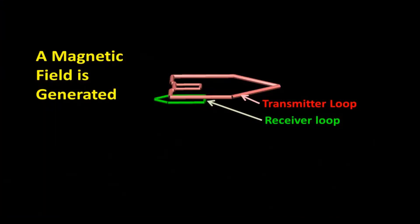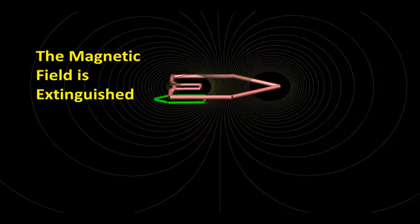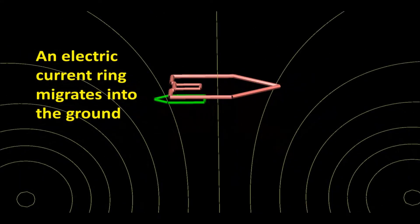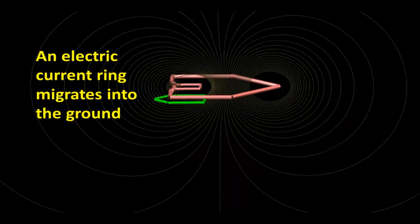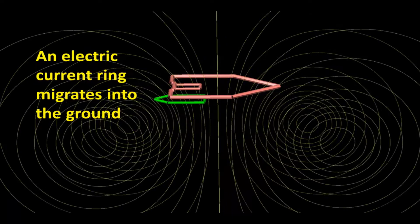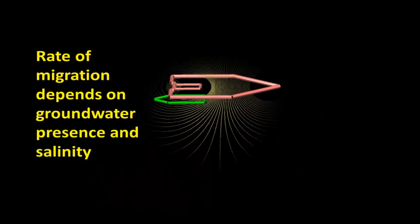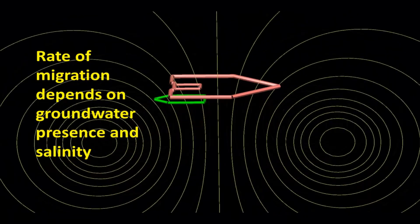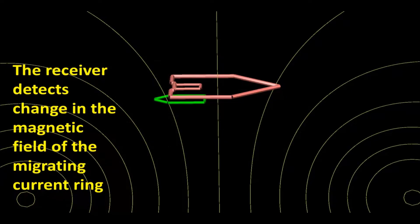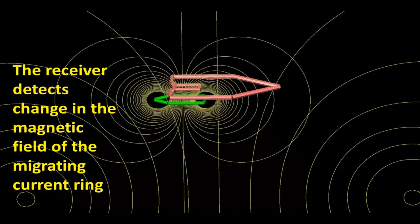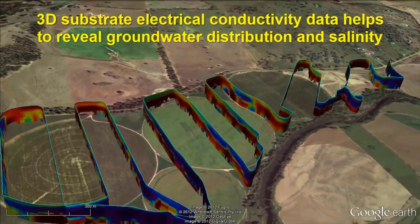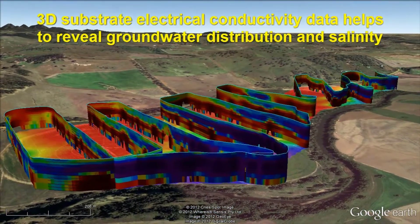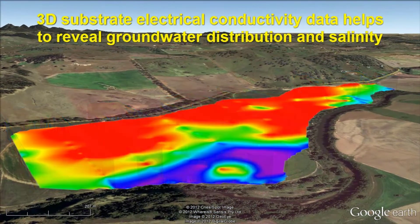The large transmitter loop creates a magnetic field, then extinguishes that field. The ground then responds by forming a ring of current underneath the transmitting loop. This ring migrates — analogous to a smoke ring — into the ground at a rate dependent on electrical conductivity at each depth within the ground. The receiver loop detects changes in the magnetic field created by the migrating current ring. Data is processed to reveal a three-dimensional substrate electrical conductivity image that helps to reveal groundwater distribution and salinity.